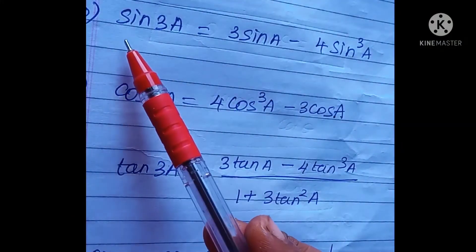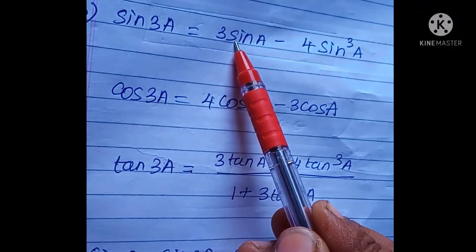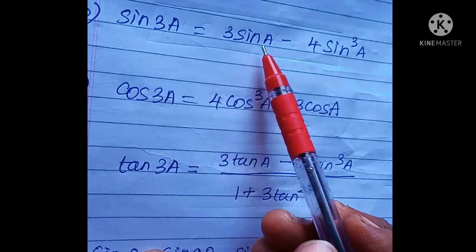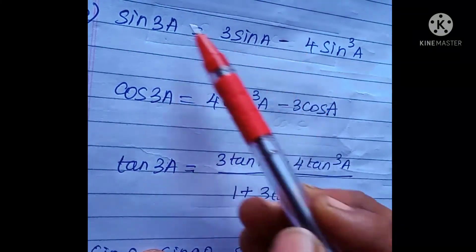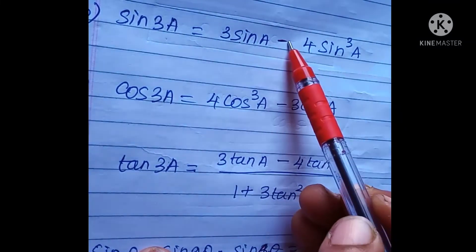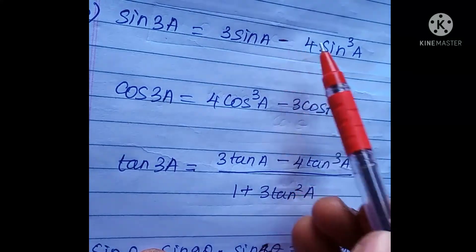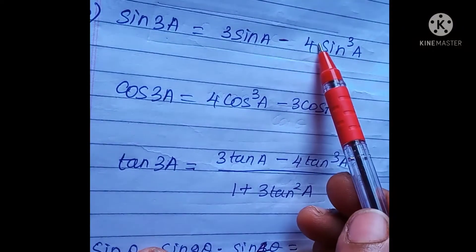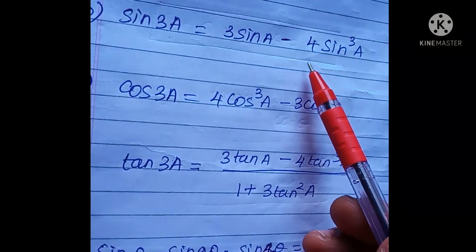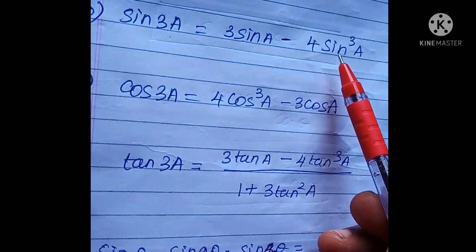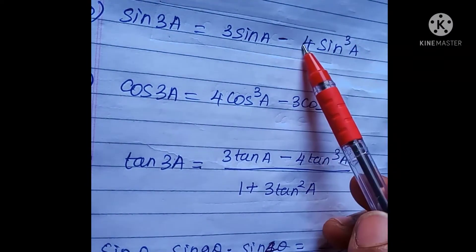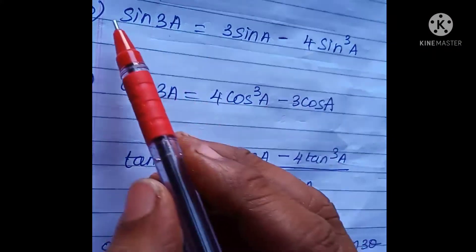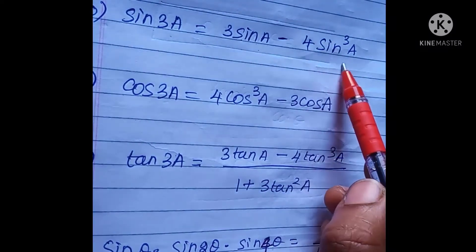The next important formula is sin3A = 3sinA − 4sin³A.